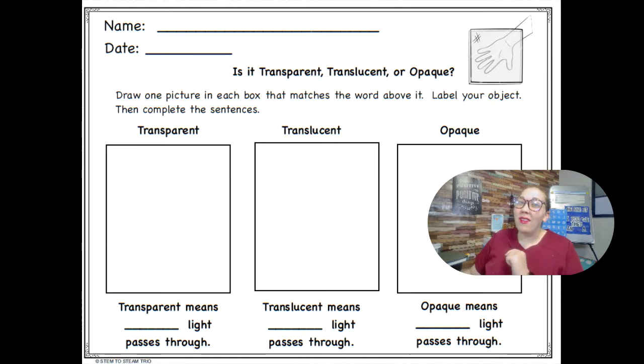Okay, so transparent. I remember using a glass and that was transparent. So I'm going to draw a picture of a glass and I'm going to label it. I'm going to write a glass cup.